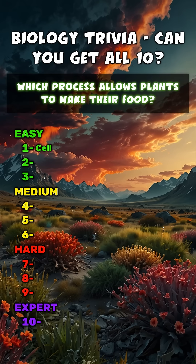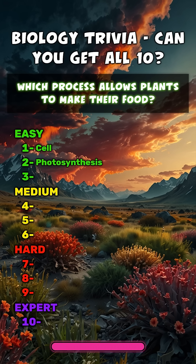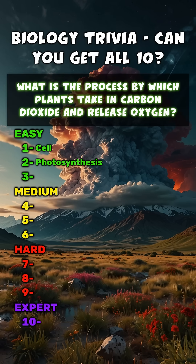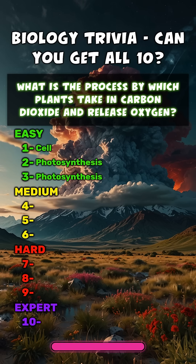Which process allows plants to make their food? Photosynthesis. What is the process by which plants take in carbon dioxide and release oxygen? Photosynthesis.